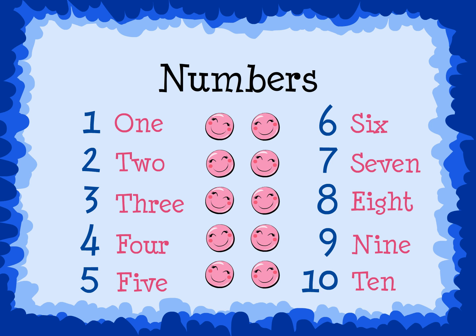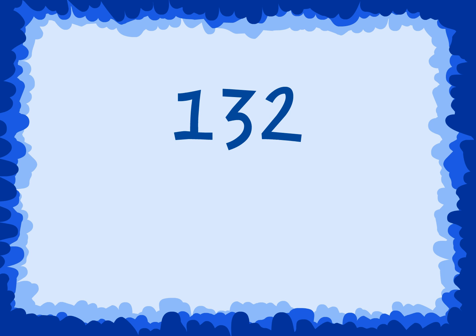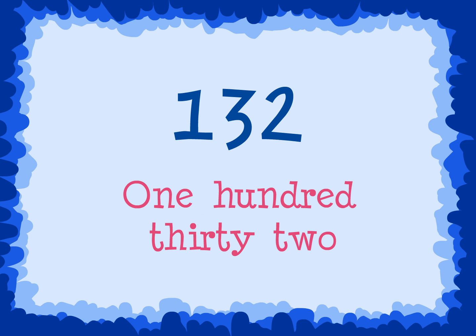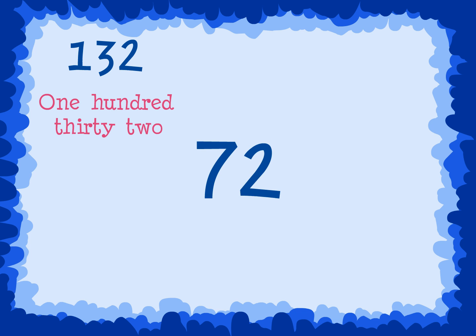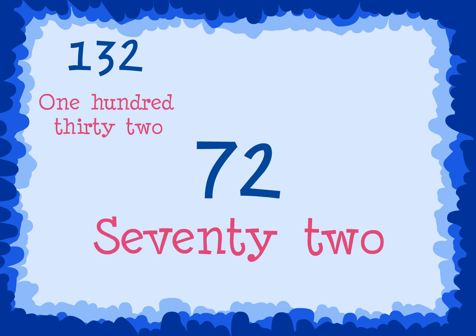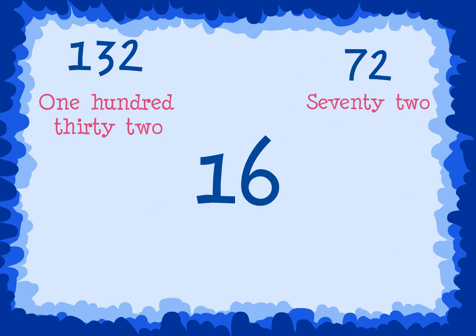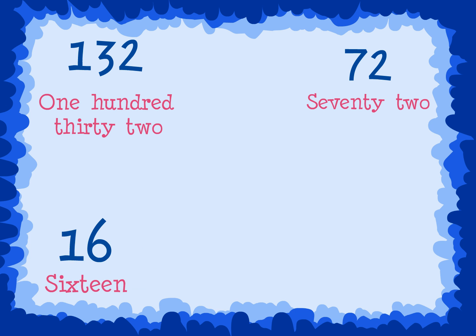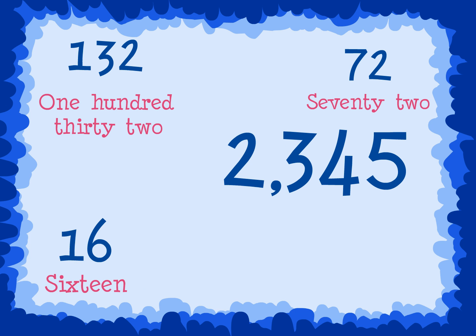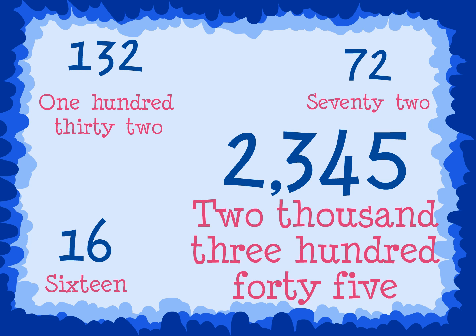Every number has a number word. For example, the number word for the number 132 looks like this: one hundred thirty-two. The number word for the number 72 looks like this: seventy-two. The number word for the number 16 looks like this: sixteen. You can even get a number word for the number 2345: two thousand three hundred forty-five.